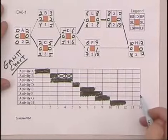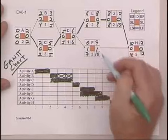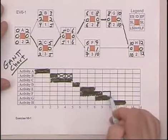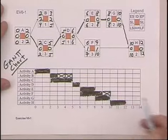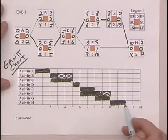And then we also have slack with F, line up F, and that's over here. We put in our X there. So here we have a Gantt chart.